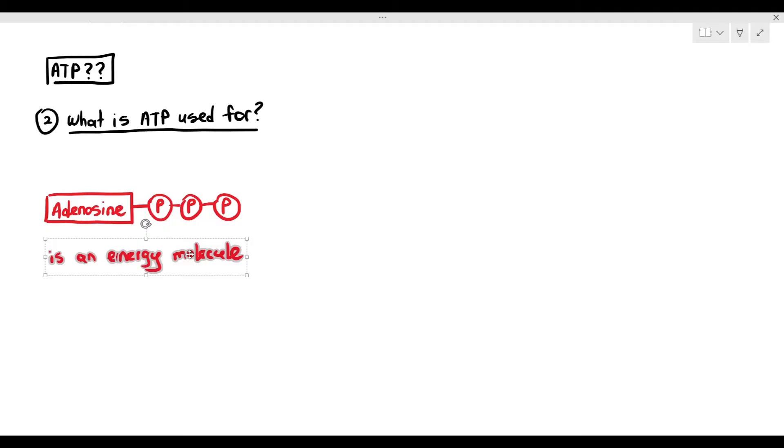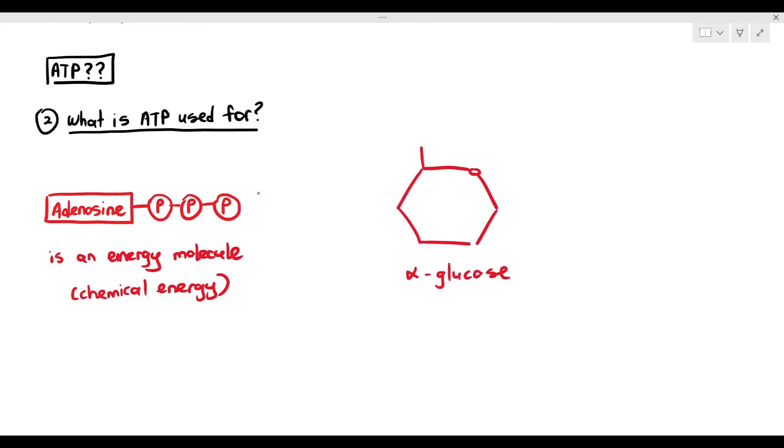ATP is an energy molecule, and it's a type of chemical energy. Immediately, some students will be like, I don't get it. You are saying to me that ATP is an energy molecule, which is a chemical energy. But in Chapter 2 of AS, I was also told that alpha glucose is an energy molecule, which is also a type of chemical energy.